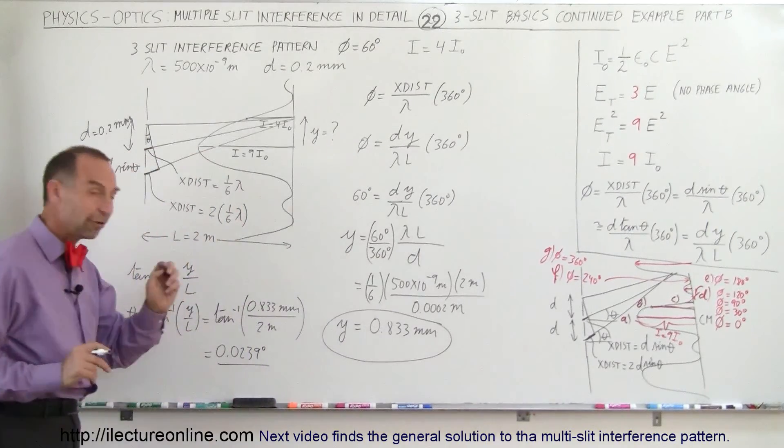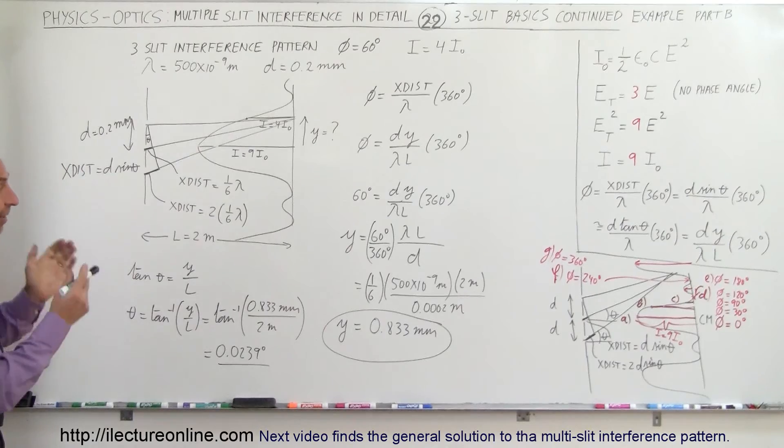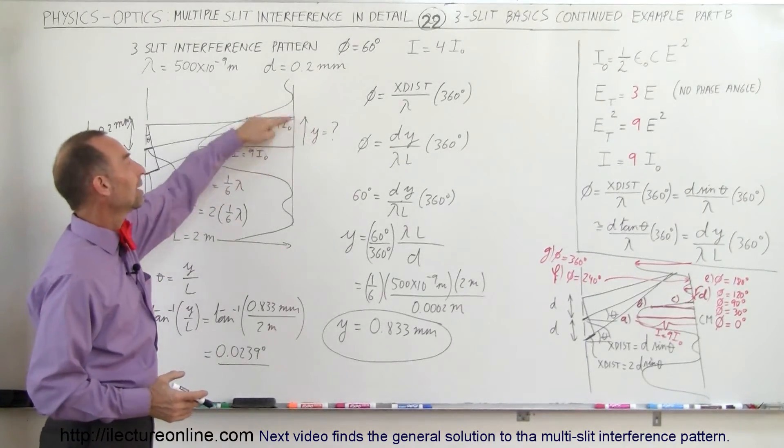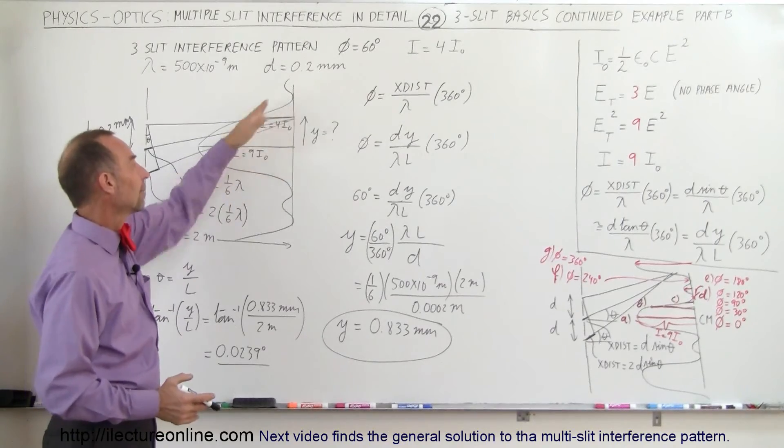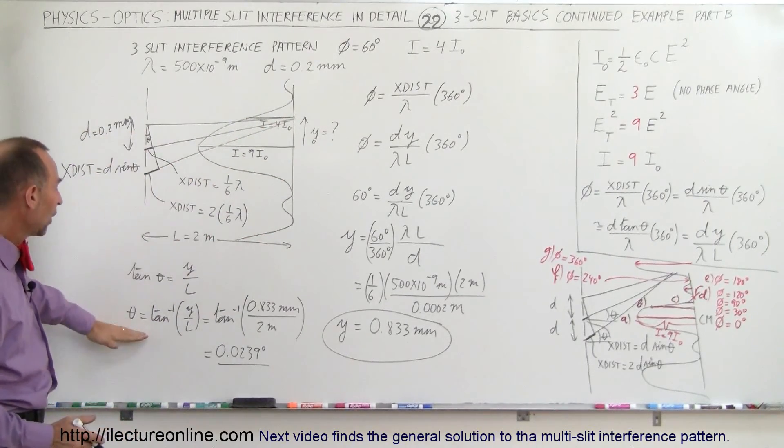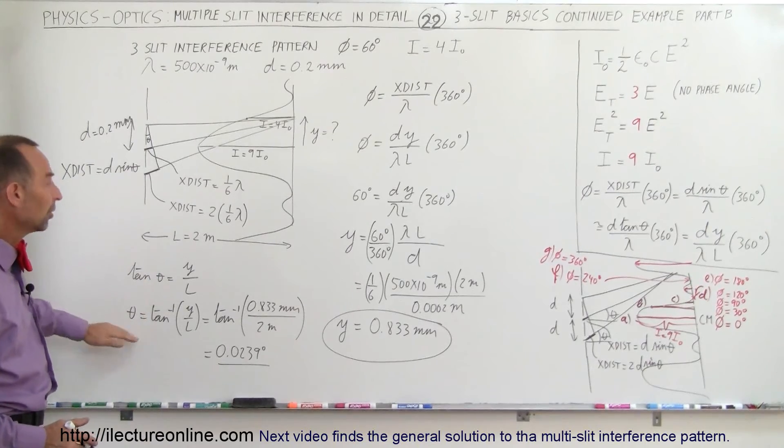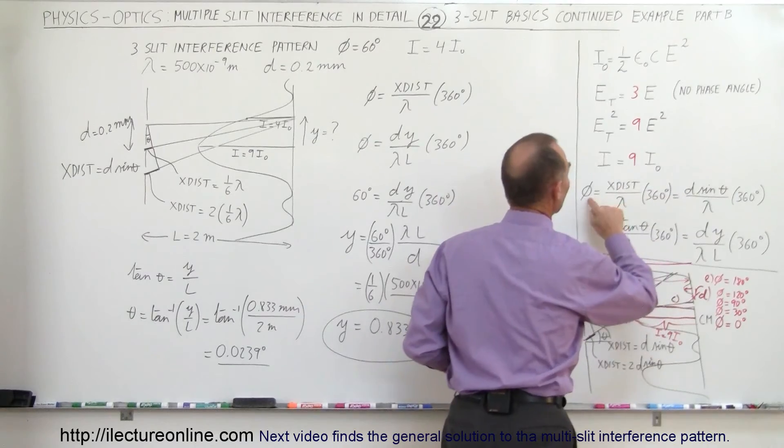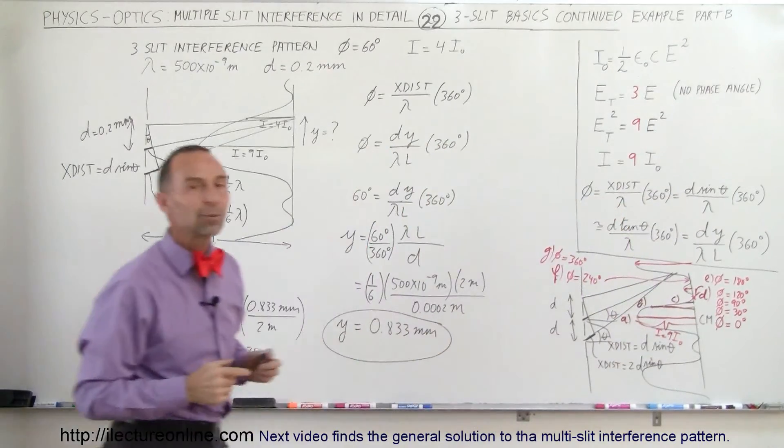Very tiny angle, very small distances, but that's how we do that. That's how we find the distance from the central max to any particular location on the interference pattern, and we also find the angle like that relative to the phase difference. So remember that we can find the angle theta when we know the phase difference phi, and that's how we do that.